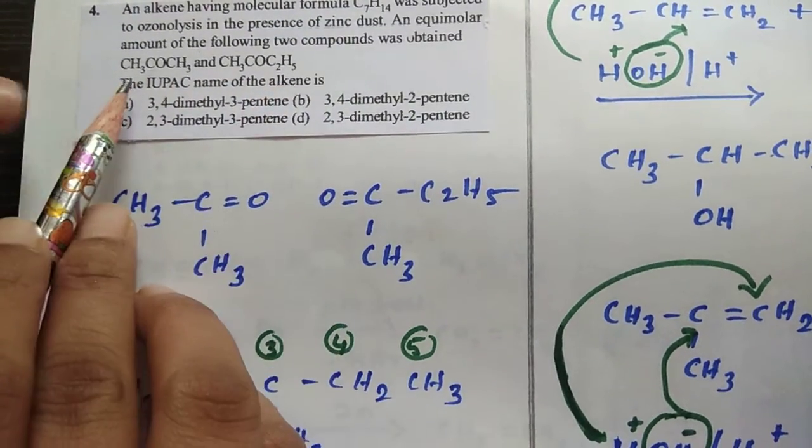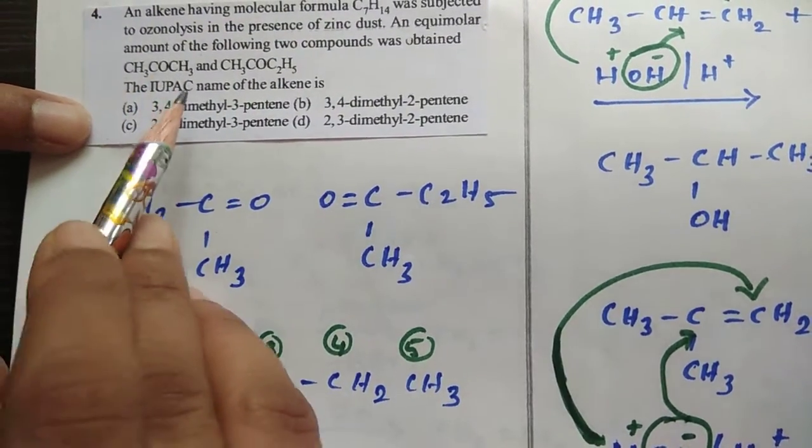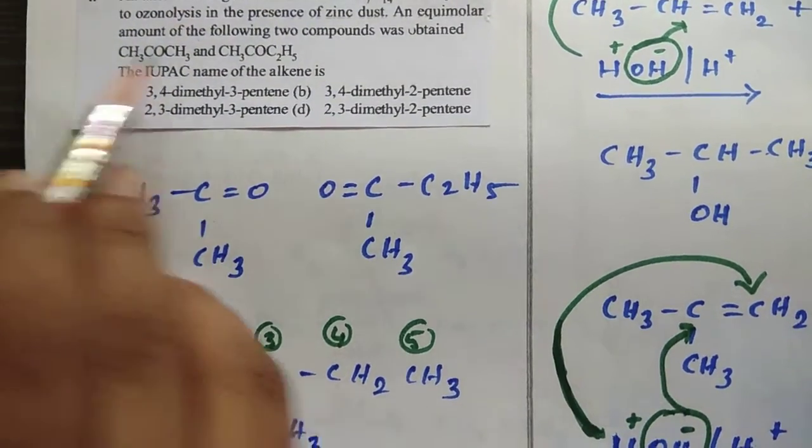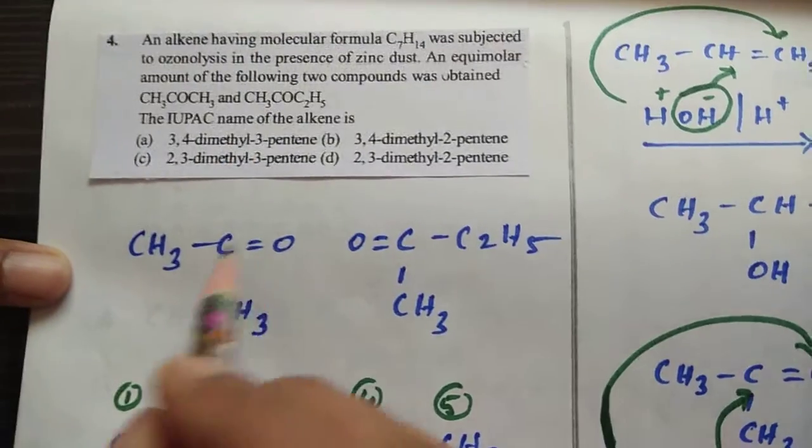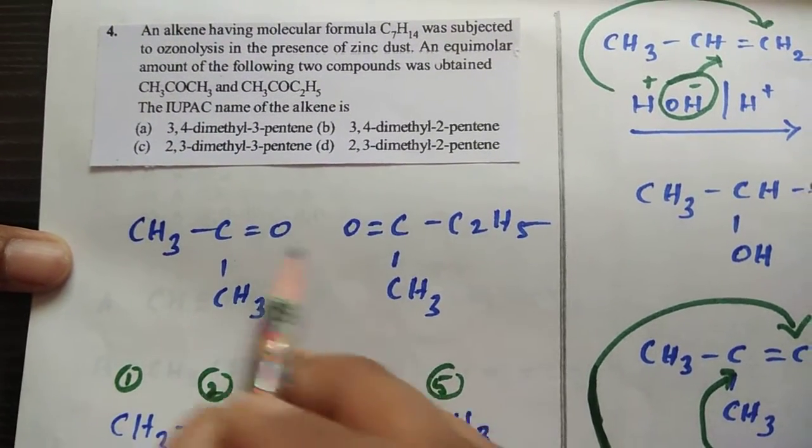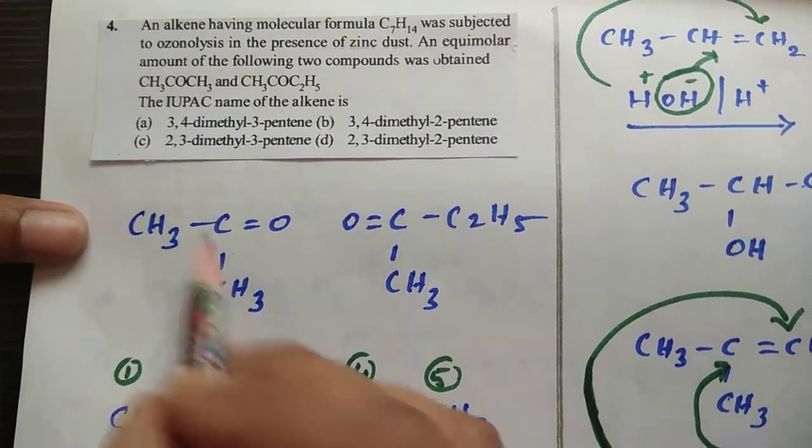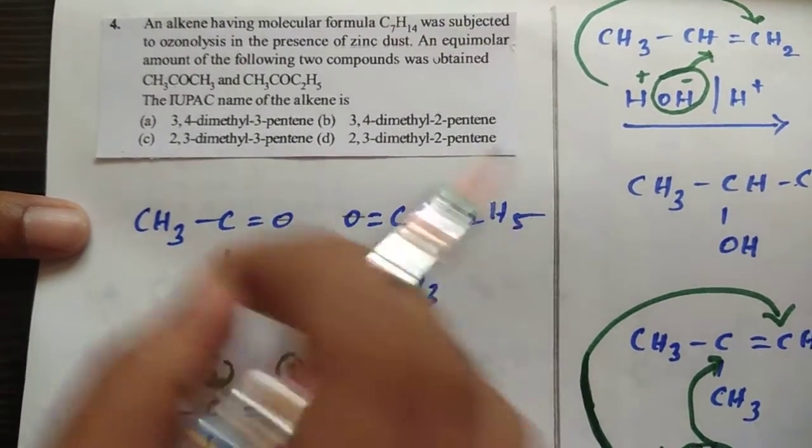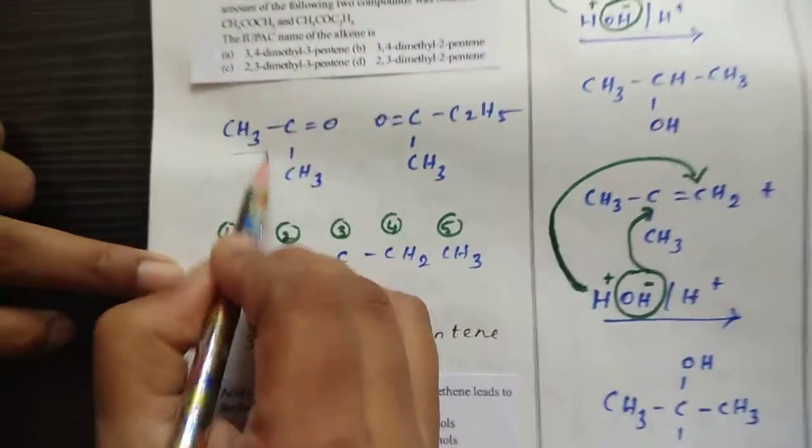They give two compounds. Generally, I'll show you a trick for how to find the alkene if it undergoes ozonolysis. If they gave the products, now I have to write the carbonyl group like this. This is the first one, acetone, and this you have to write like this. You just remove these two oxygens from ozonolysis and join these two with a double bond, friends.